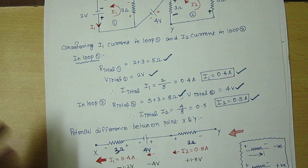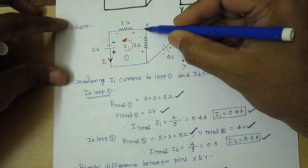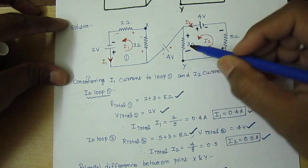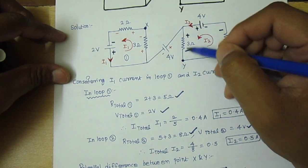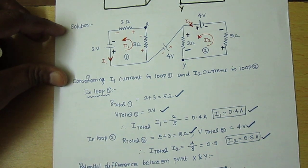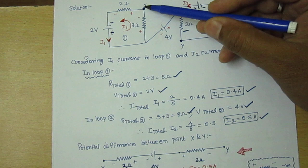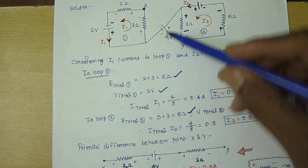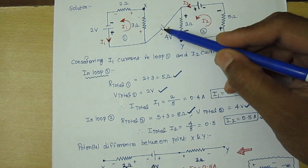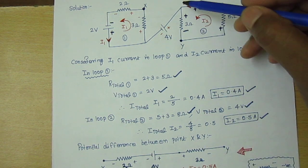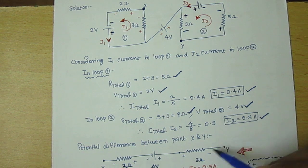Now coming to the important concept. The given circuit has point X and point Y. I am stretching the path from X through the 4 volt source and then to Z. You can relate X — this is your X, then 3 ohms, then 4 volt is given, then this terminal, then Y.